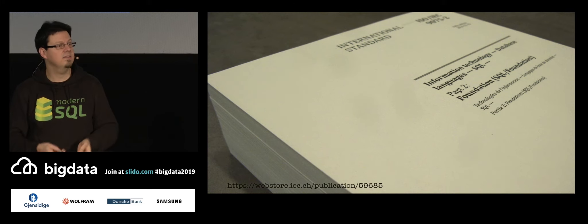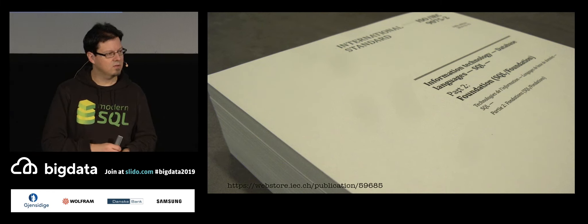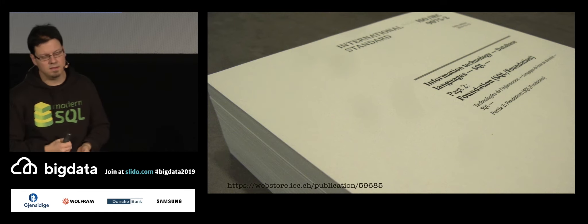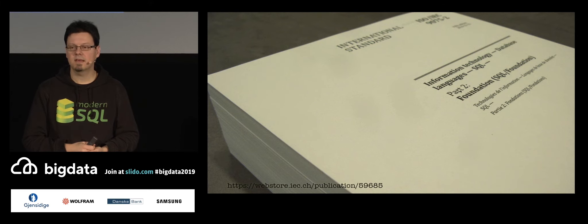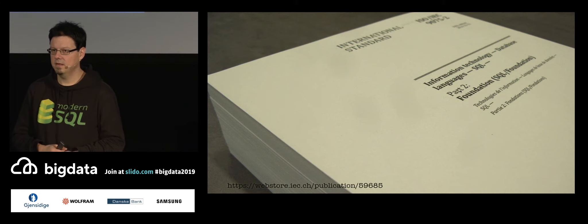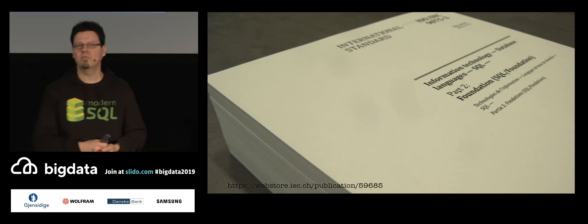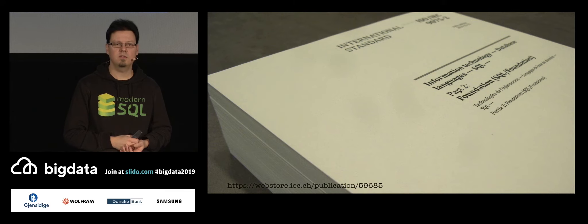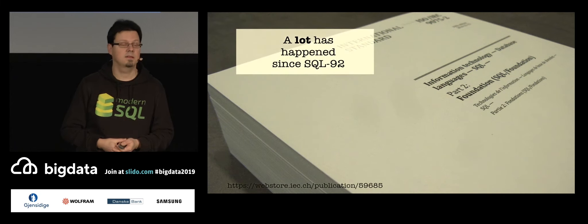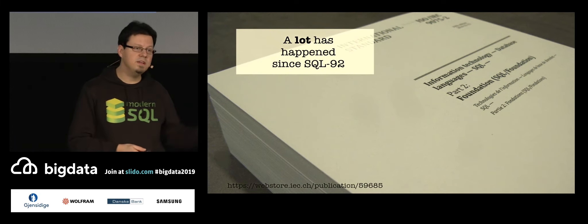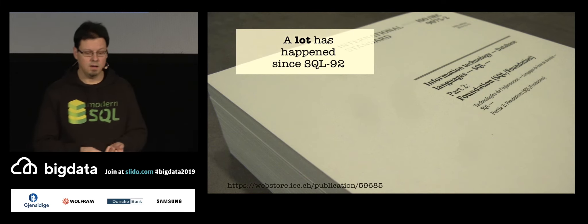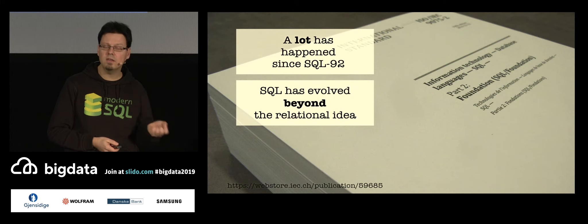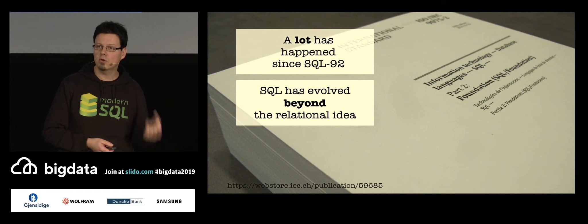So what I would like to give you as an impression here is currently the SQL standard consists of 4,000 pages. SQL-92 has had 750 pages. So that's roughly 20% of what it is today. In other terms, SQL is five times as much as it used to be with SQL-92. A lot has happened since SQL-92. I could show you only a few features, a few selected features in there. There are many, many more features. It has truly evolved beyond the relational idea. I think this is the most important message in here. If you think about relational databases, it's actually a bad term.